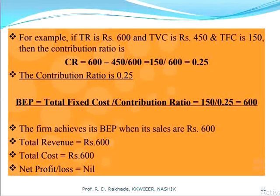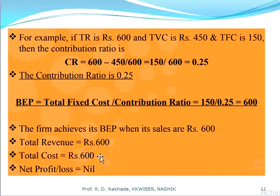In a second example using the contribution ratio: if total revenue is ₹600, total variable cost is ₹450, and total fixed cost is ₹150, then the contribution ratio = (Total Revenue − Total Variable Cost) ÷ Total Revenue = (600 − 450) ÷ 600 = 0.25. Break-even point = Total Fixed Cost ÷ Contribution Ratio = 150 ÷ 0.25 = ₹600. So the firm achieves its break-even point when sales revenue is ₹600, giving zero profit or loss.